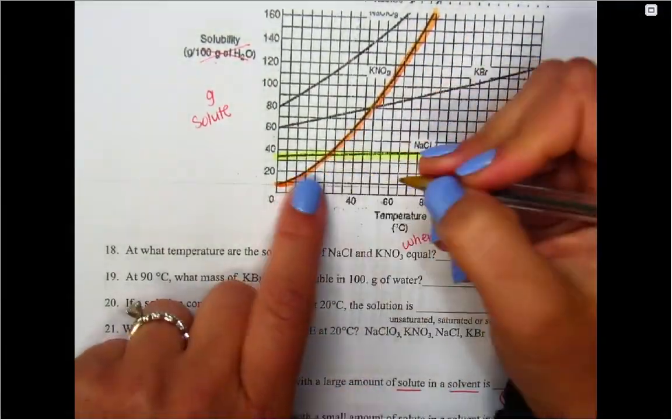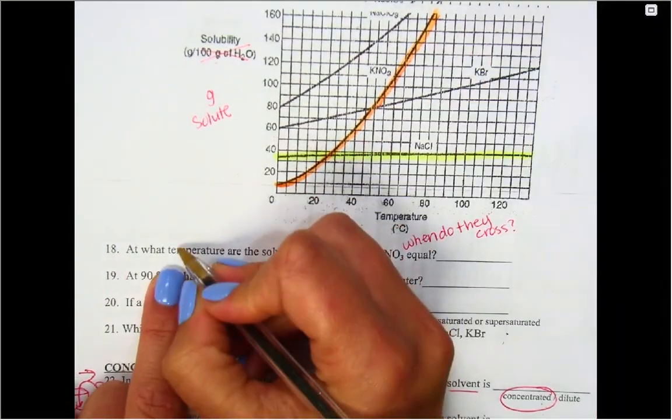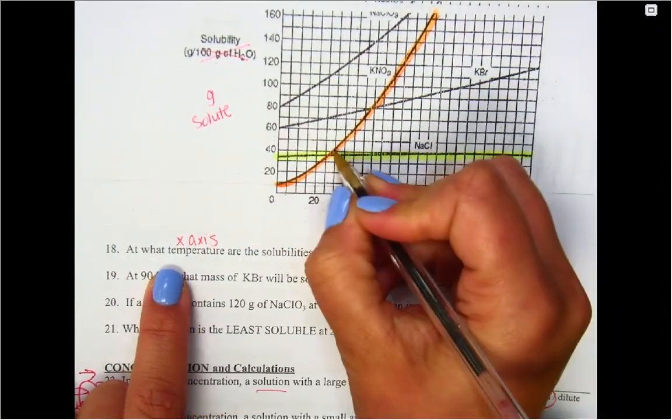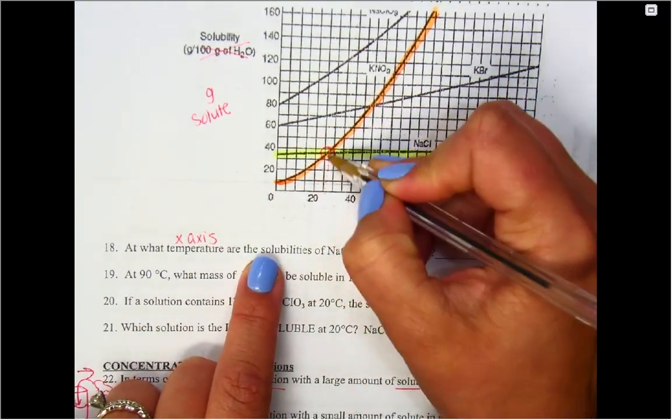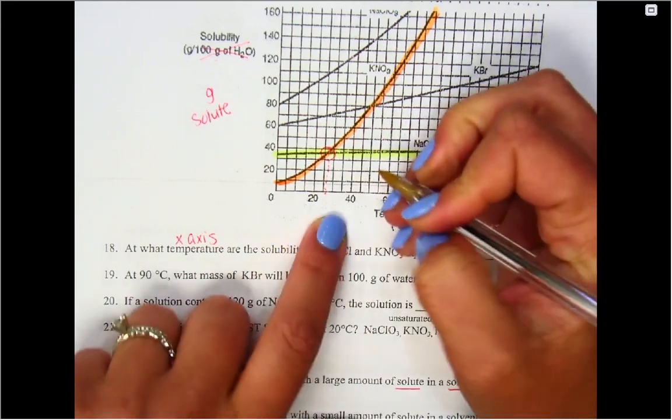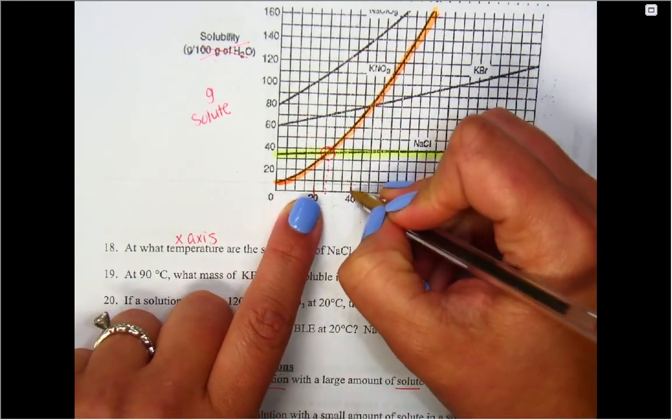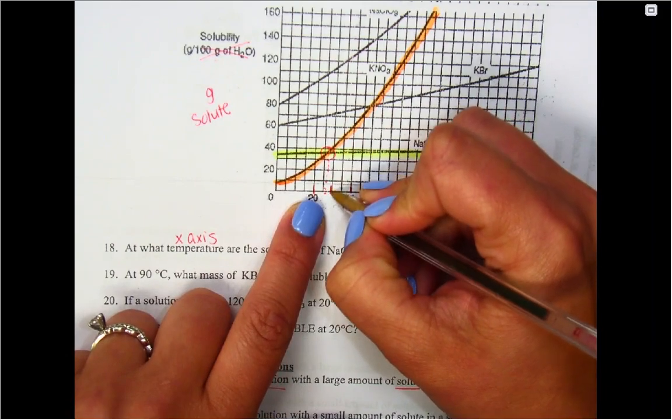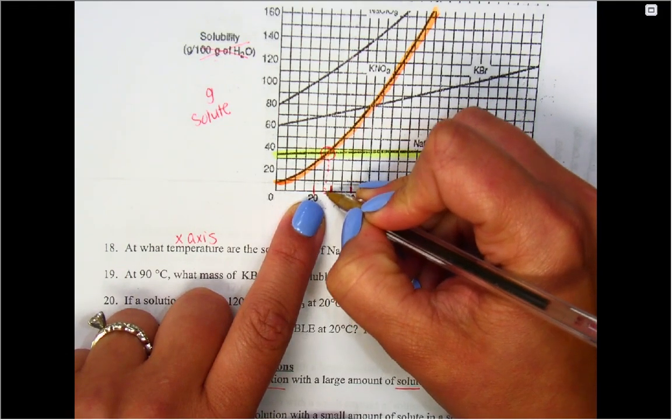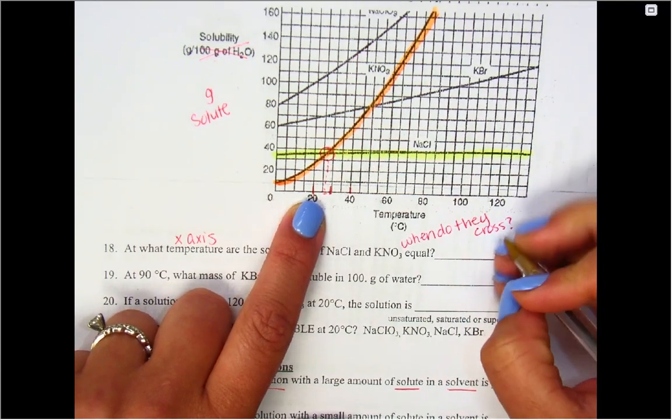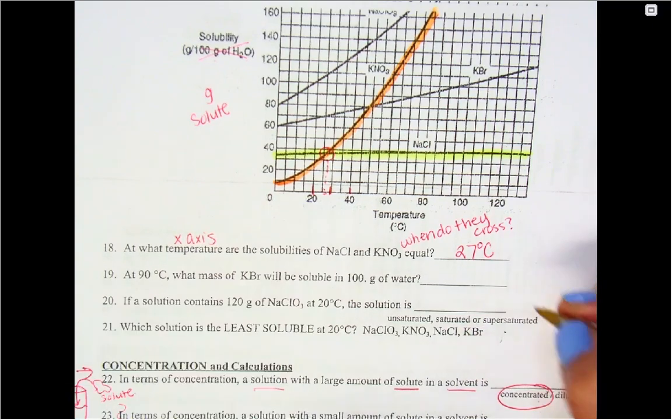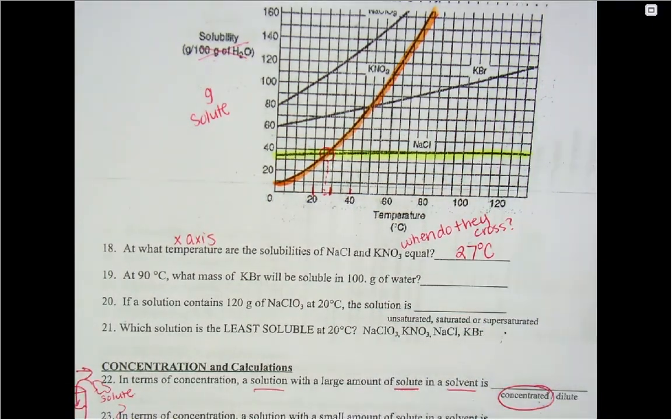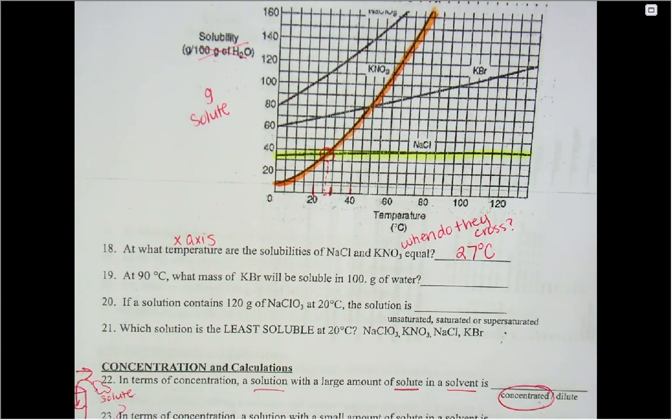We're trying to figure out where they cross, at what temperature. Temperature is talking about the x-axis, so once I find where they cross right here, I'm going to look down at my x-axis and see where I'm hitting. I see that I have 20 right here, 40 over here, that means in the middle is 30. So what would you guys say that one is, 25, 26? I'm actually going to say 27 because it's over to the right a little bit more. Anywhere in that range is fine.